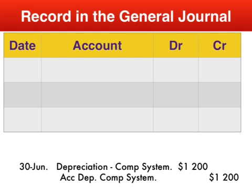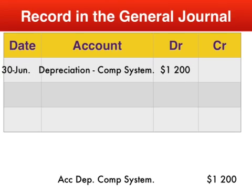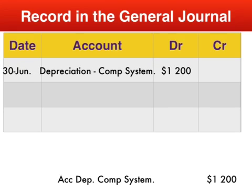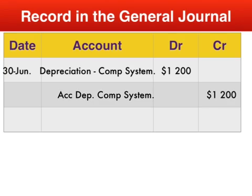To actually record this information, we do a debit to our depreciation expense for $1,200. It's important to identify the name of the asset, particularly if we have multiple non-current assets, in order to comply with the relevance qualitative characteristic and provide useful information to report users. We have an expense increasing here. We also do a credit entry to our accumulated depreciation account, which is listed as a negative non-current asset in the balance sheet and represents the total allocation of the asset's cost so far.